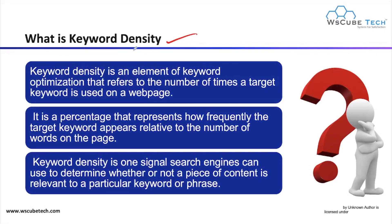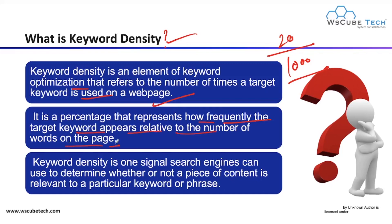Keyword density is an element of keyword optimization that refers to the number of times a targeted keyword is used on a page. For example, if you have an article of 1000 words, the number of times you are using your targeted keyword — say 20 times or 30 times — that is your keyword density. It is a percentage that represents how frequently the targeted keyword appears relative to the total number of words on the page.